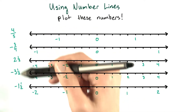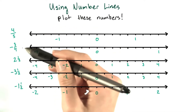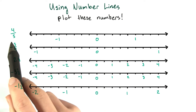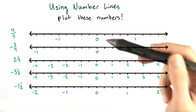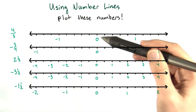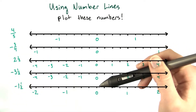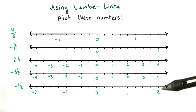For each of these numbers, there's a number line. Please plot each number on the number line. You should notice that each number line has 0 at the center, but the scales are not all the same.